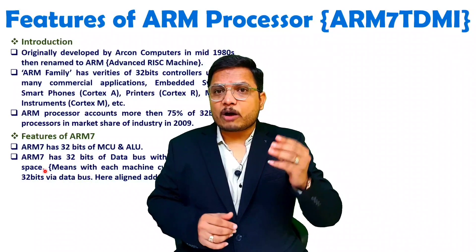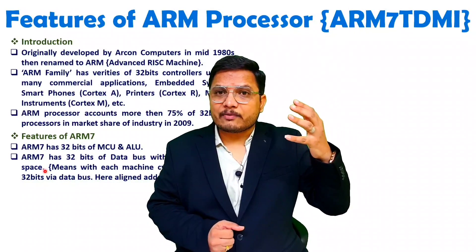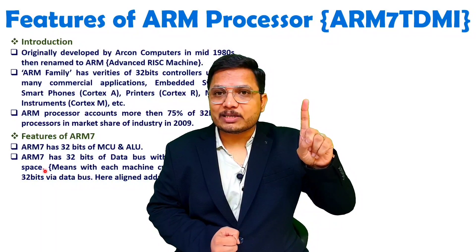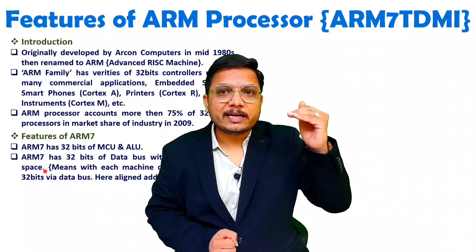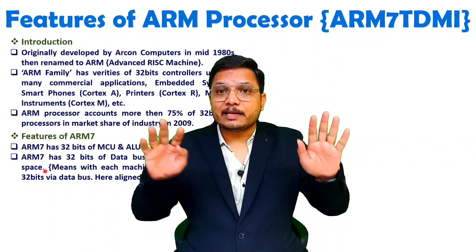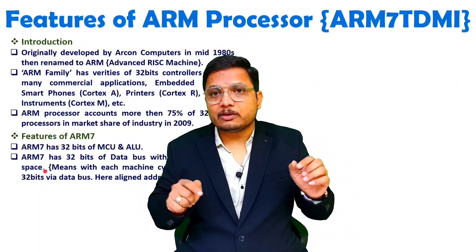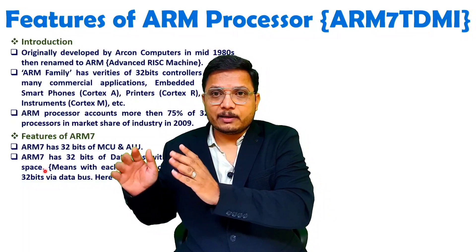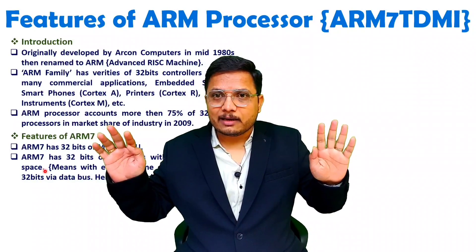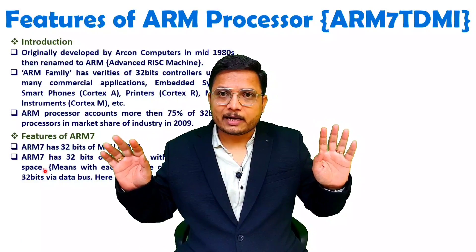When we talk about 32-bit data, it cannot be directly taken from a single memory chip, because in a single machine cycle a memory chip can provide only 8 bits. So we bisect memory into 4 chips placed in parallel — chip 1, 2, 3, and 4. The 32-bit data line is split into 8 bits per chip. In a single machine cycle, we execute 32 bits of data by 4-level memory banking.